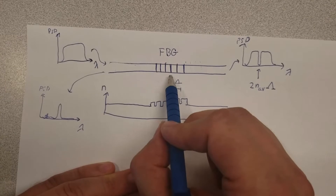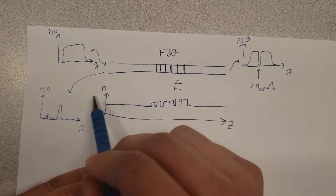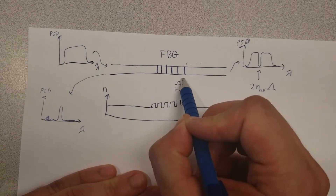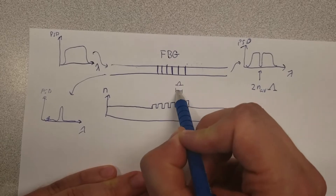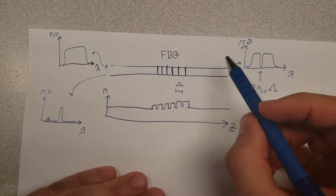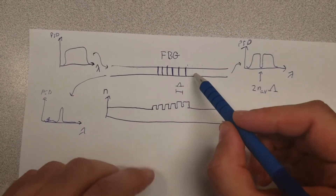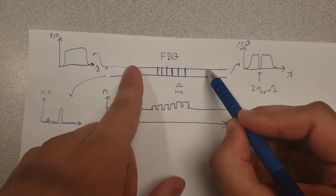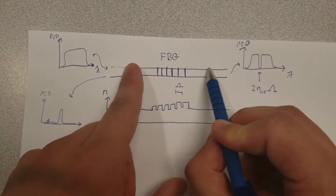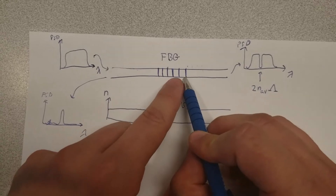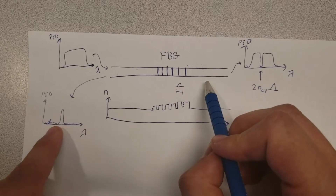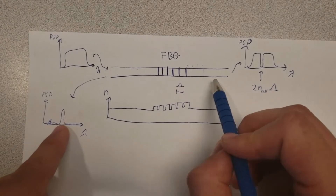Another exciting feature is that since the wavelength we filter out depends on the grating spacing, any mechanism for changing the spacing can be used for tuning the selected wavelength. For example, we can stretch the grating mechanically by attaching something to both ends and physically stretching it, which alters the spacing and therefore changes the location of the peak we filter out.